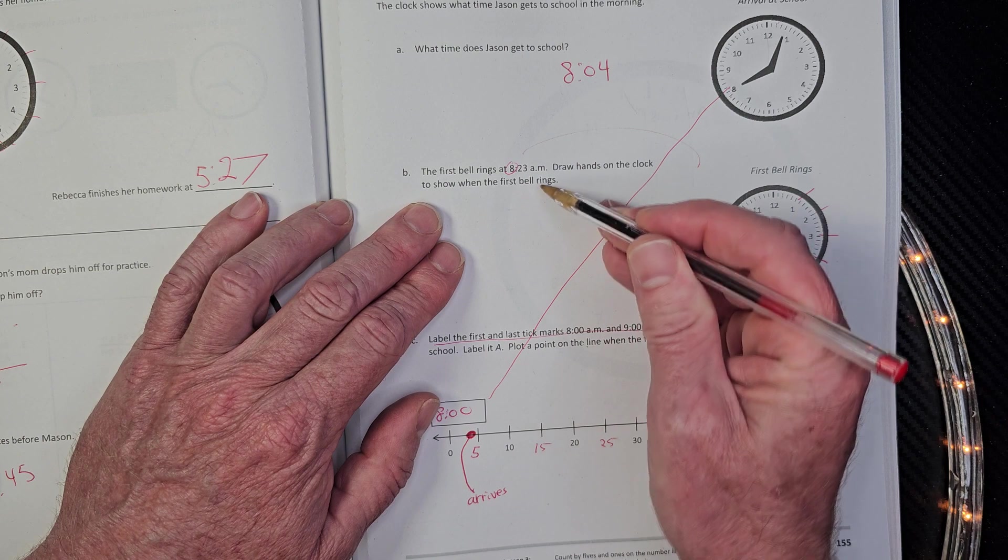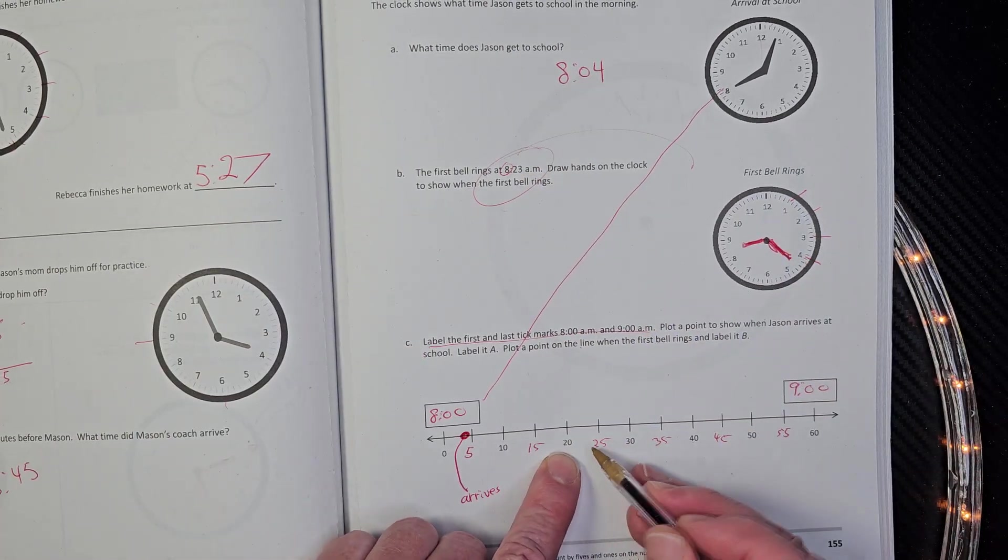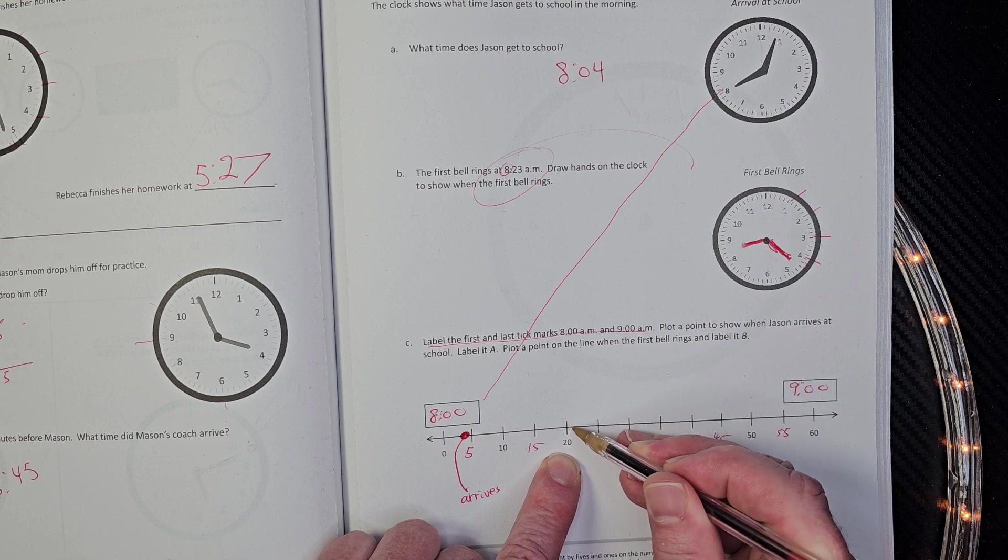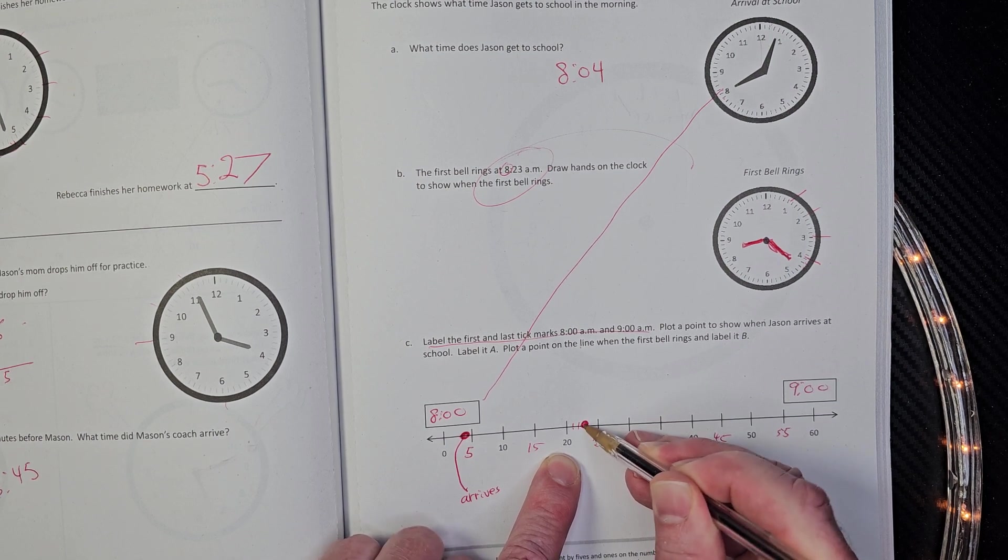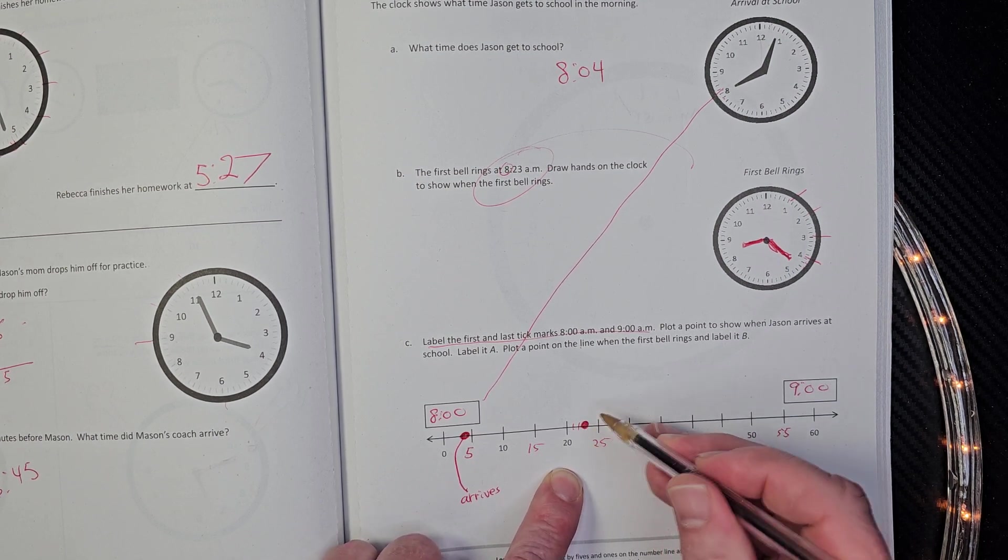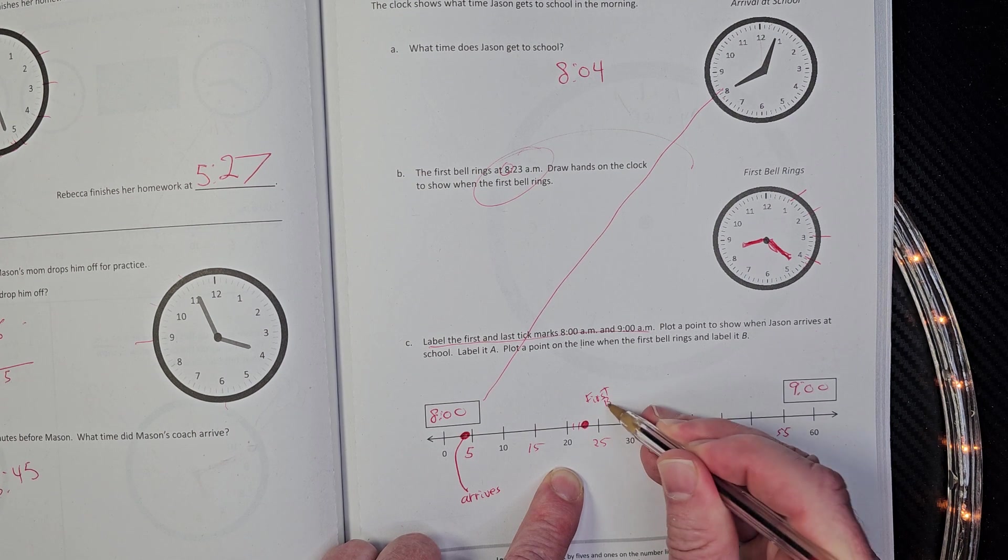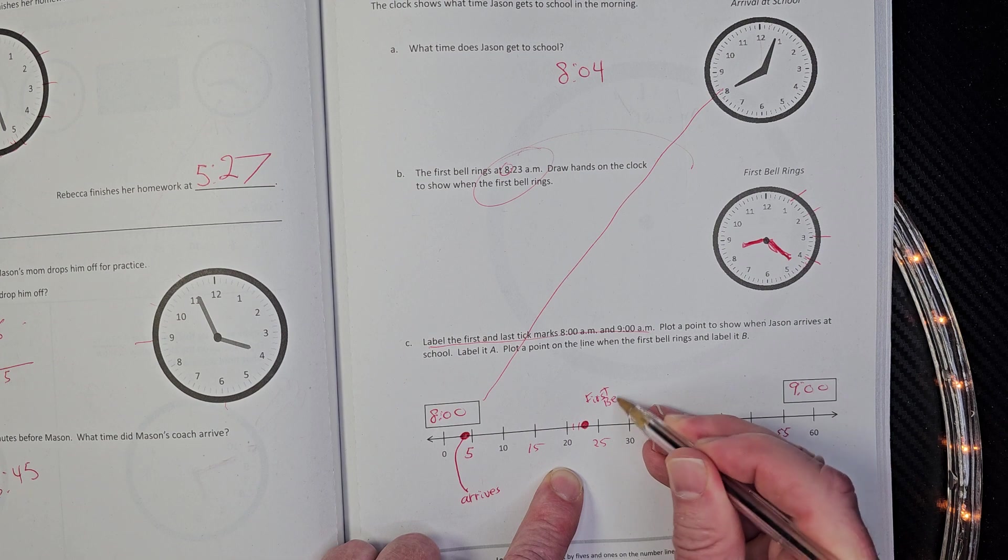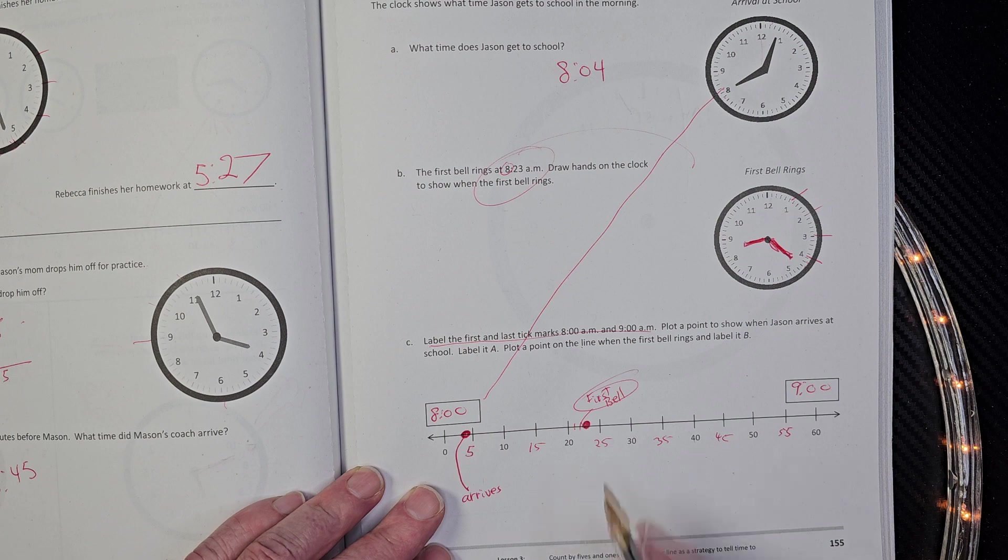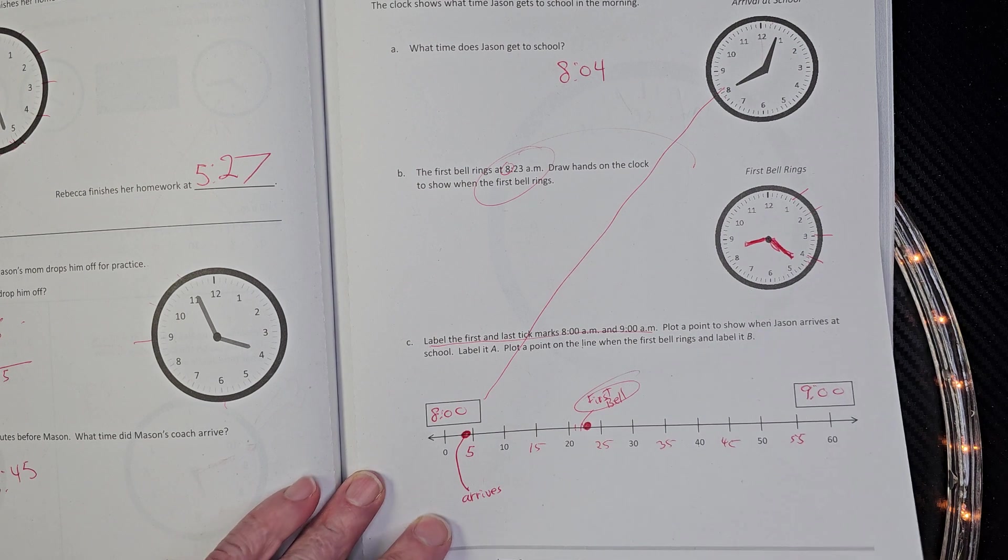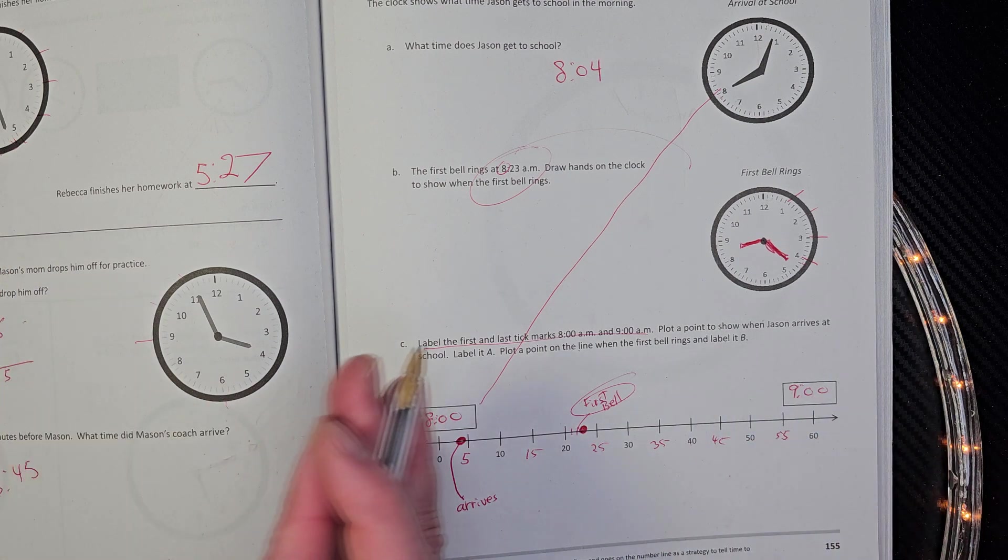Here. So we have 20 and then 25. So we have 20, 21, 22, 23. It's going to be right here. 8.23. That's the first bell. I don't know how you want to label that. You can put it as a 8. Yeah. I'm just going to put first bell right there. Looking good. I hope you're writing neater than me. All right. Is that it? That is it. We did it. We accomplished it. I hope you had fun today.